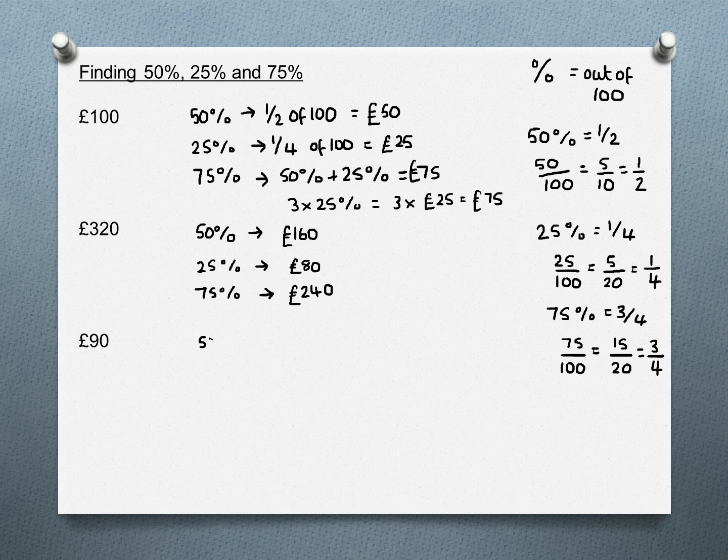Looking at 90 pounds, 50% is half, that's 45. For 25%, we're going to need to halve this again. Half of 40 is 20, half of 5 is 2.5, so add those together: 22.5, or 22 pounds 50. For 75%, we can add these two together to get 67 pounds 50. Those are easy ways to work out 50%, 25%, and 75%.